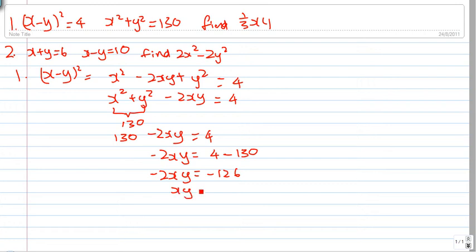And xy equals 63. So if you want to find ⅓xy, it's simply ⅓ times 63, or ⅓ of 63, which is 21. All right, let's do question two.